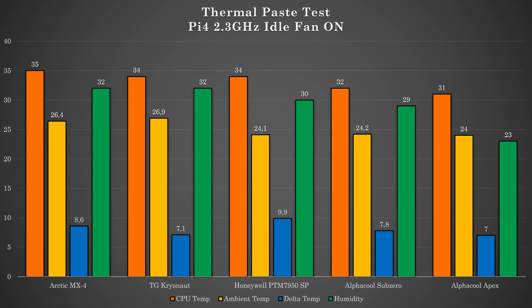Now with fan on we are getting around 7 to 9 degrees C of delta between CPU and ambient temperature. Thermal Grizzly is again winner here.